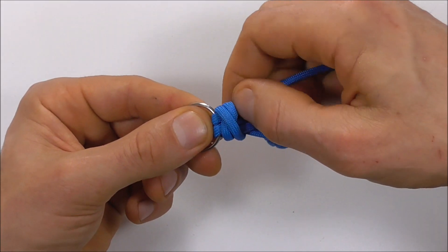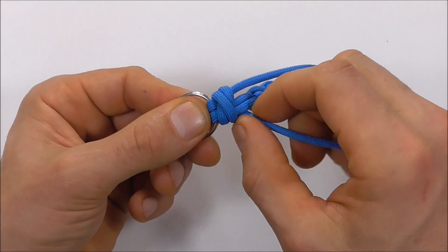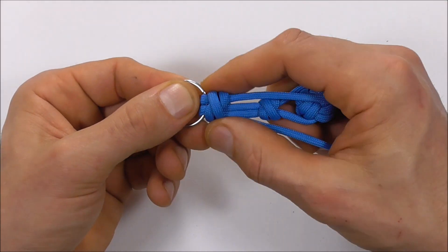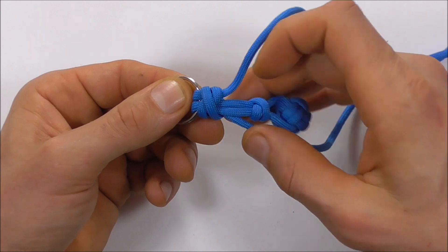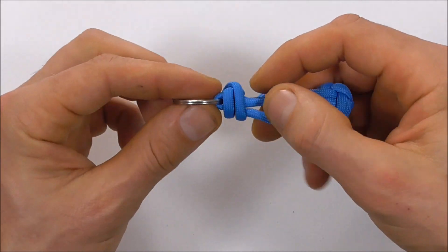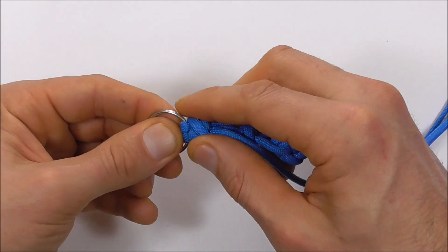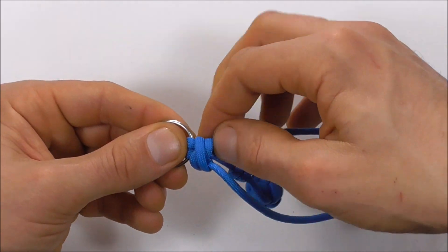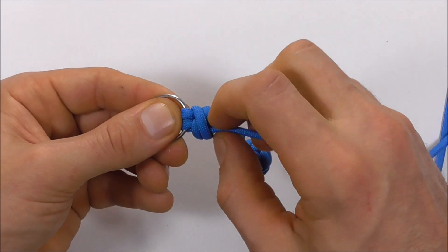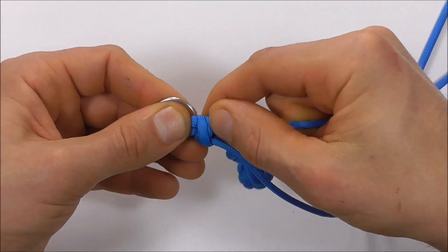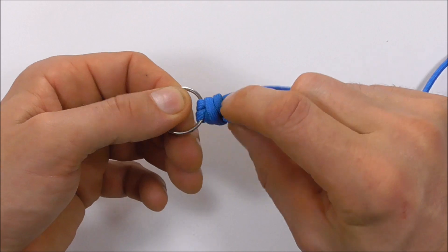Tighten it up a little bit at a time, trying to keep that X centered along these strands on this side. When you flip it over, you might have to play with the knot and get that X centered on the other side, and then just proceed to tighten the whole knot up.